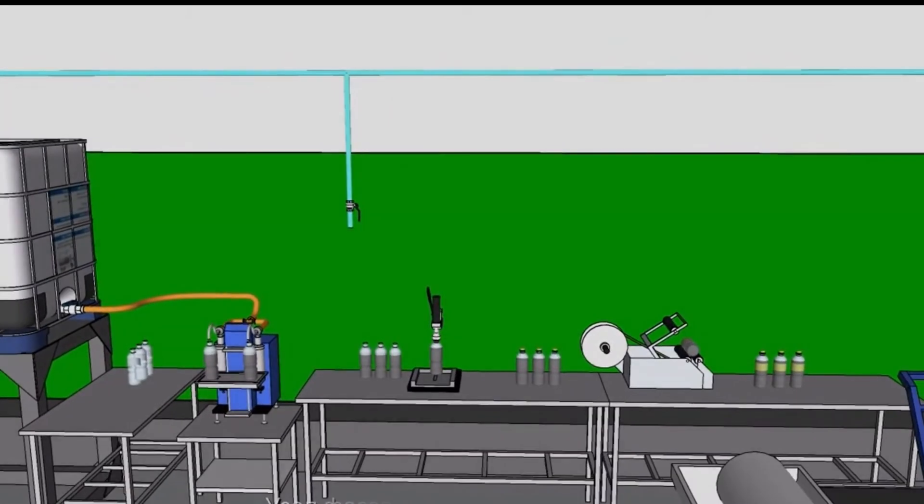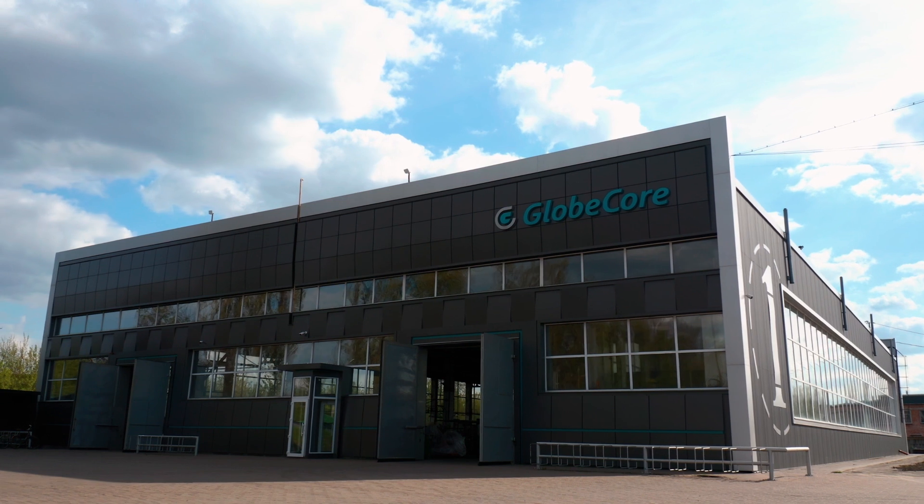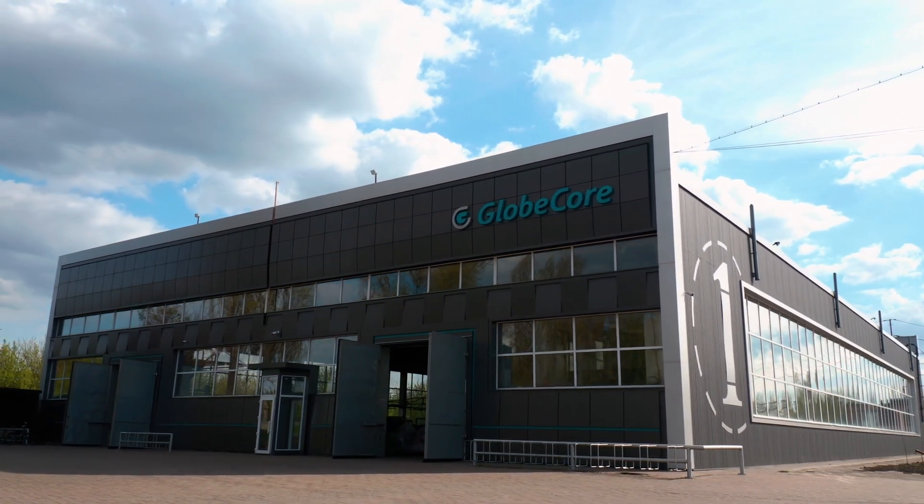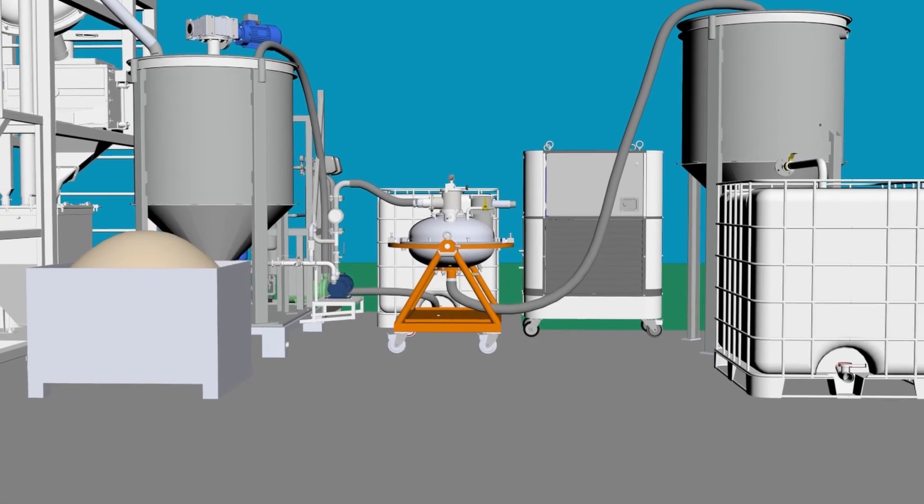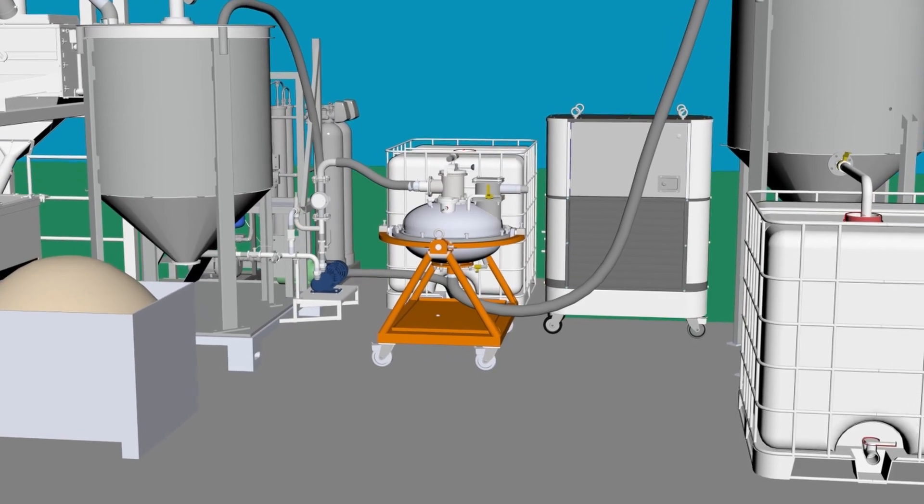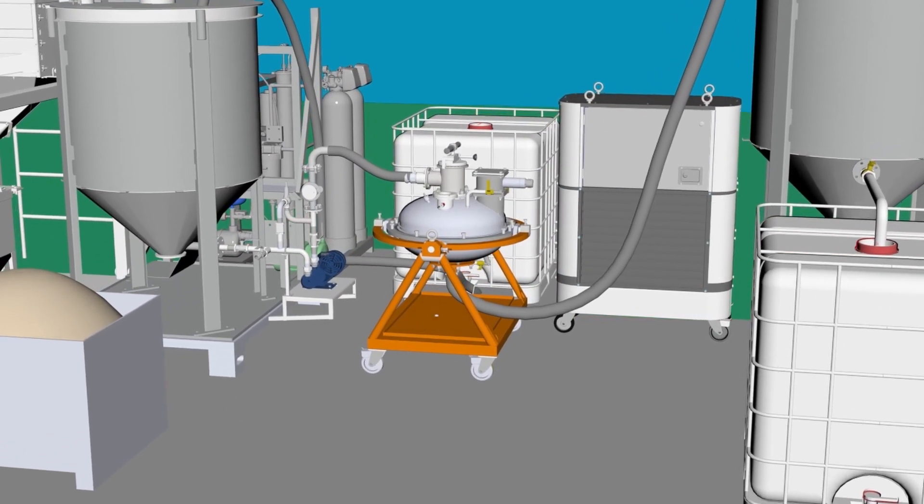The GlobeCore company has found a solution to optimize the production of humic fertilizers. These are AVS vortex layer devices that help extract humates from organic raw materials and use them to the maximum in restoring soil fertility.